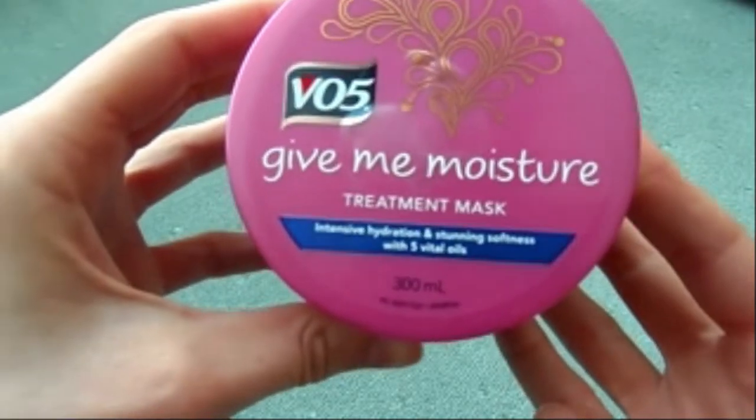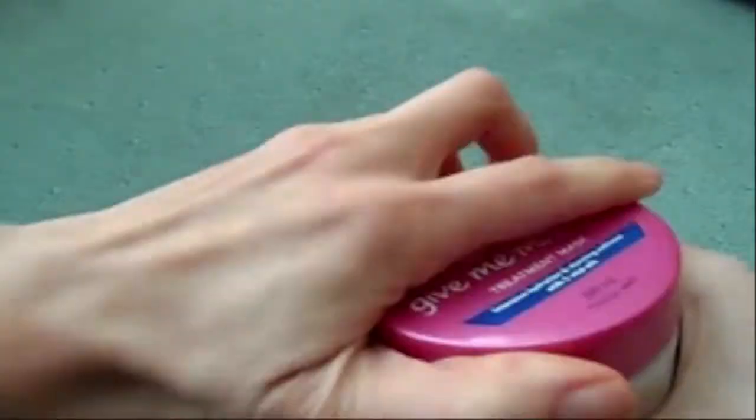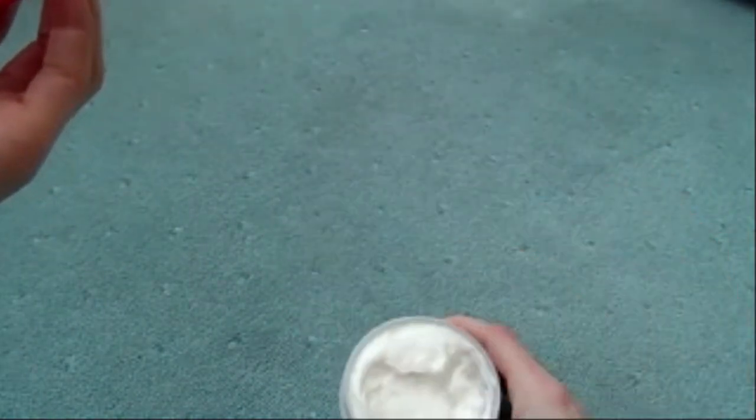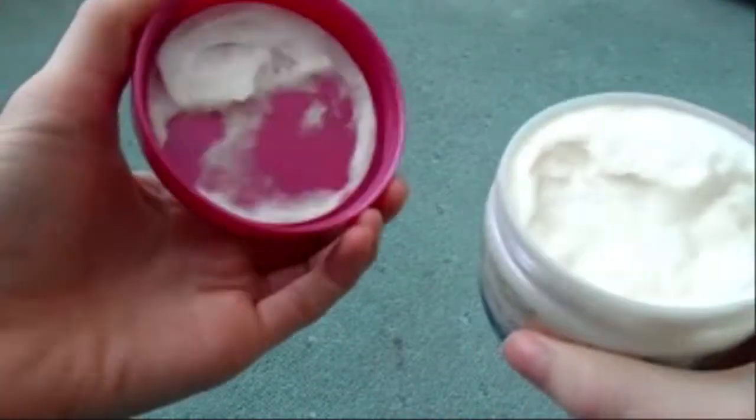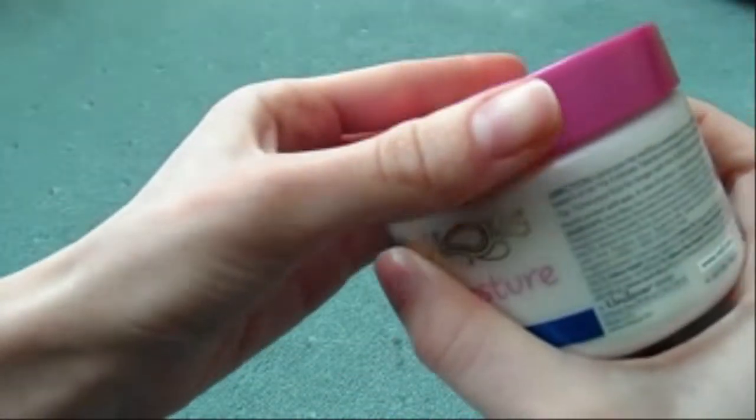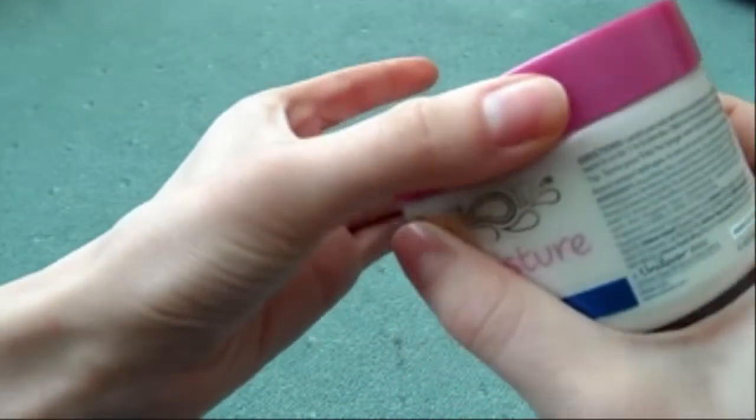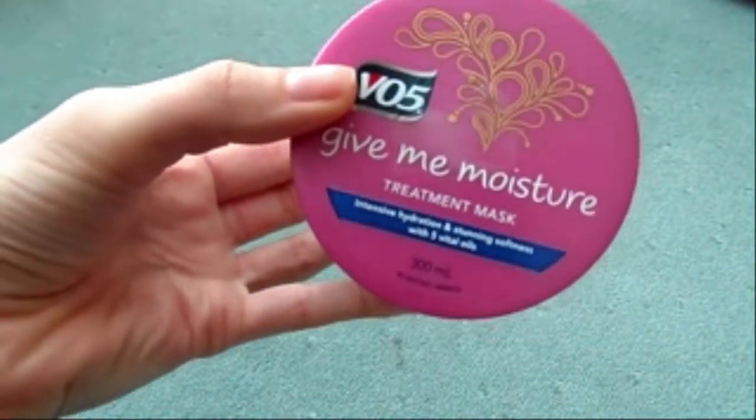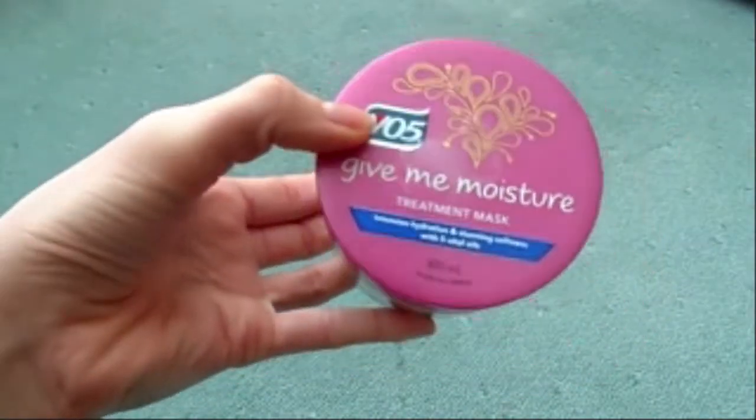It is the Real Five Give Me Moisture Treatment Mask, which gives intensive hydration and silkiness with five vital oils. You get quite a big tub and you just scoop your hand in and put it on your hair. It doesn't instruct you how often to use it, but I think I'm going to do it maybe every 10 days or every third wash, because things like this don't work as well if you do them all the time.